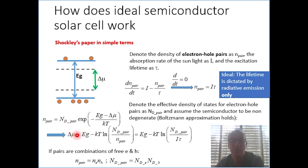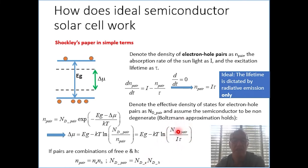The log of this function includes the density of states and the density of charges. This figure shows again that we have this balance between generation and recombination.